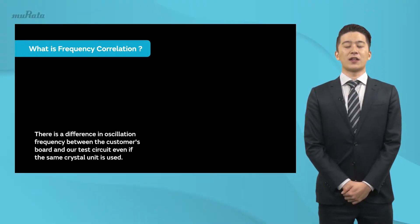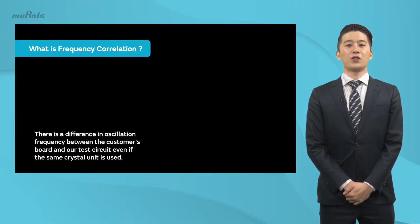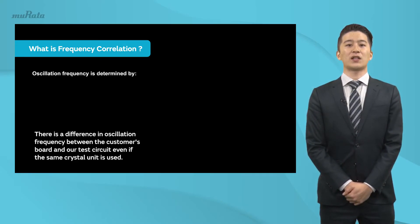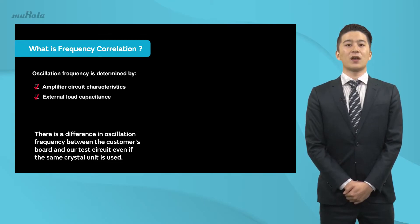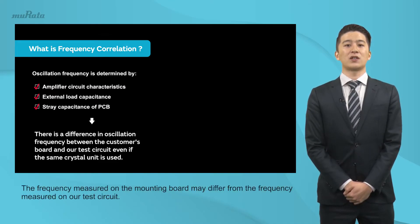There is a difference in oscillation frequency between the customer's board and our test circuit even if the same crystal unit is used. This is called oscillation frequency correlation. The actual oscillation frequency is affected by the characteristics of the amplifier circuit, external load capacitance, and stray capacitance of the mounting board. The frequency measured on the mounting board may differ from the frequency measured on our test circuit.